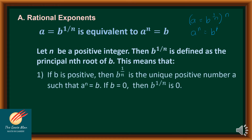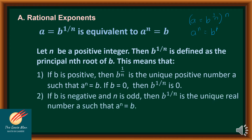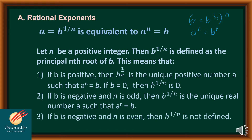This means: number 1, if b is positive, then b raised to 1 over n is the unique positive number a such that a raised to n equals b. If b = 0, then b raised to 1 over n = 0. Number 2, if b is negative and n is odd, then b raised to 1 over n is the unique real number a such that a raised to n equals b. And finally, if b is negative and n is even, then b raised to 1 over n is not defined.